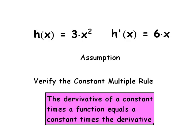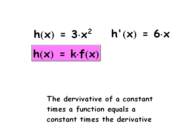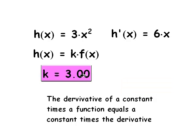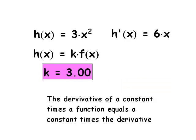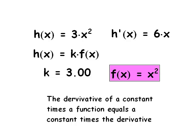In natural language, the constant multiple rule sounds like this: the derivative of a constant times a function equals a constant times the derivative of that function. In this case, my function h(x) is actually made up of a constant times the function f(x). The constant in this case is 3, and f(x) is x squared.